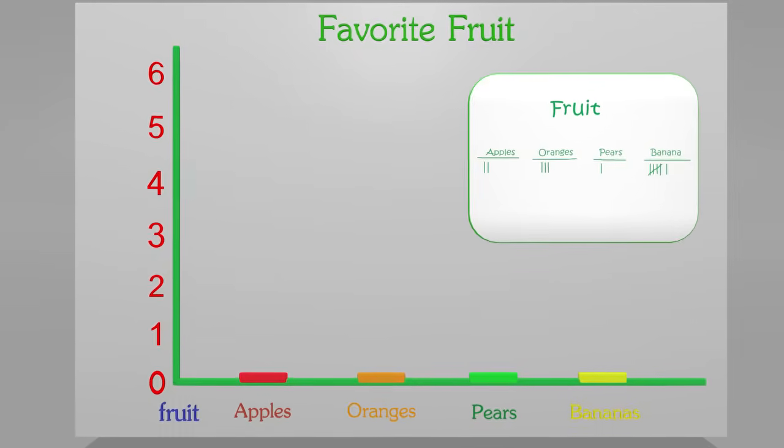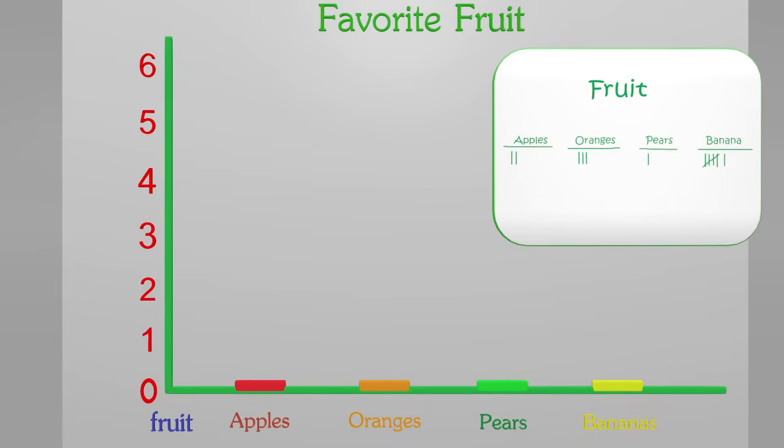On the side, we need to measure how many people liked these different types of fruit. We only need to go up to six, since our information or tally marks only go up to six. So the numbers going from one to six represent the amount of people.